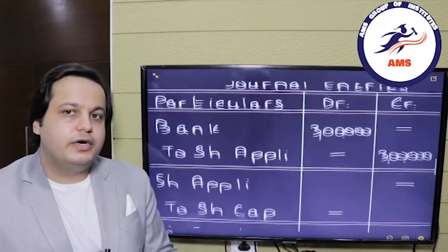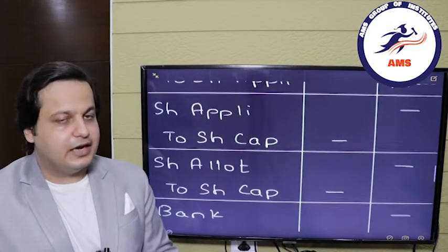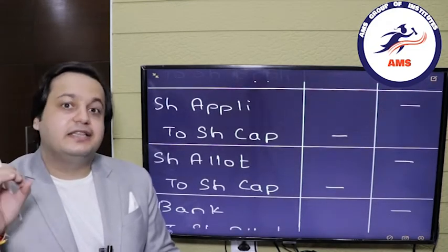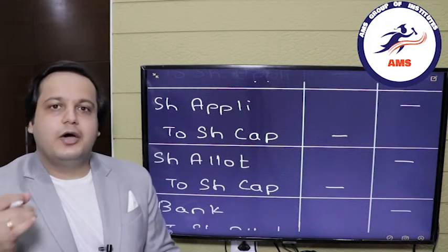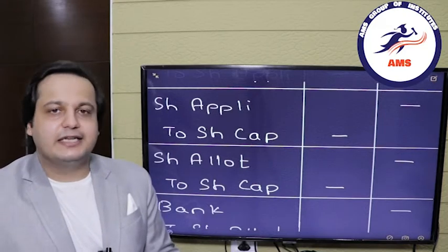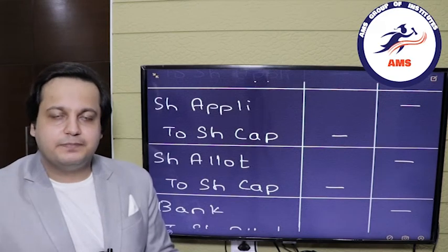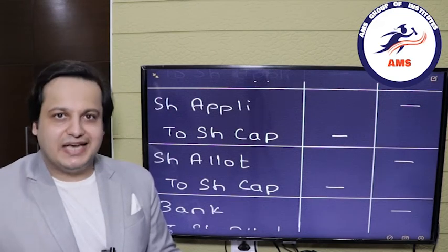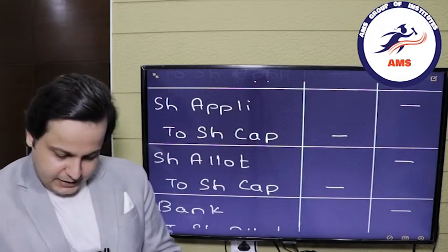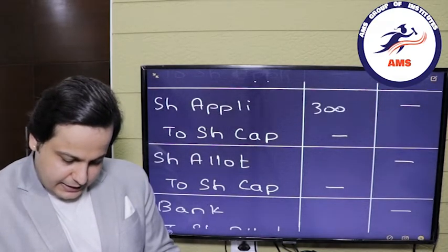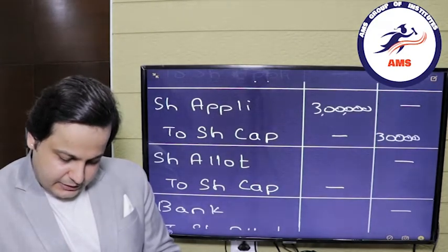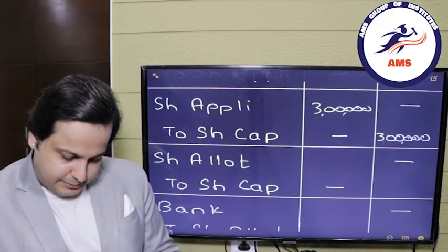Next we will capitalize this entry. Since we are not rejecting any shares and there is no pro-rata allotment, we will fully capitalize the application money of ₹3 lakhs. The entry will be share application account debit to share capital, amount ₹3 lakhs. So ₹3 lakh application debited and ₹3 lakh share capital credited.